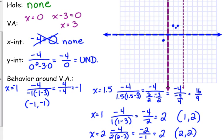That's enough there in the middle, so let's pick a number that's bigger than 3. What's a good number for that? 4. I like 4. Negative 4 over 4 times 4 minus 3. Well, that's negative 1.